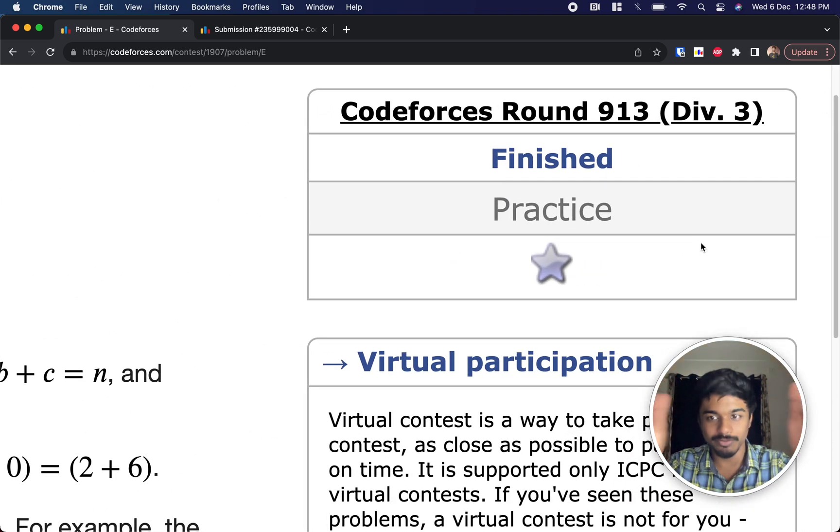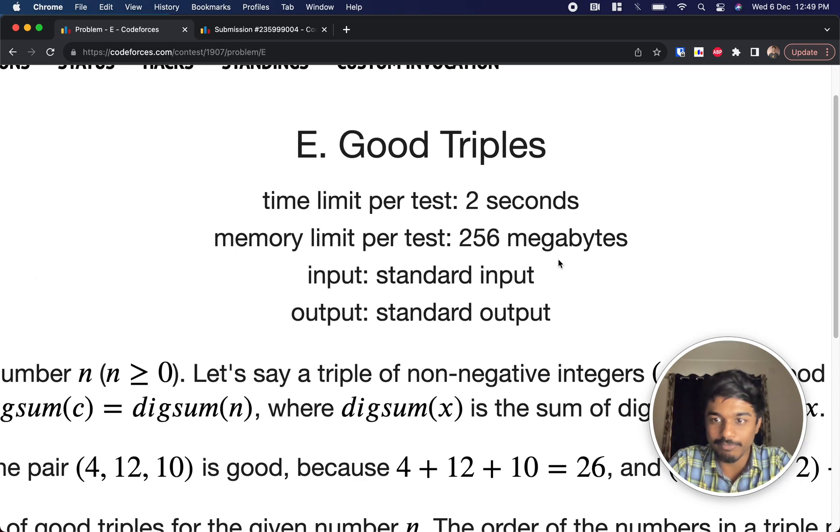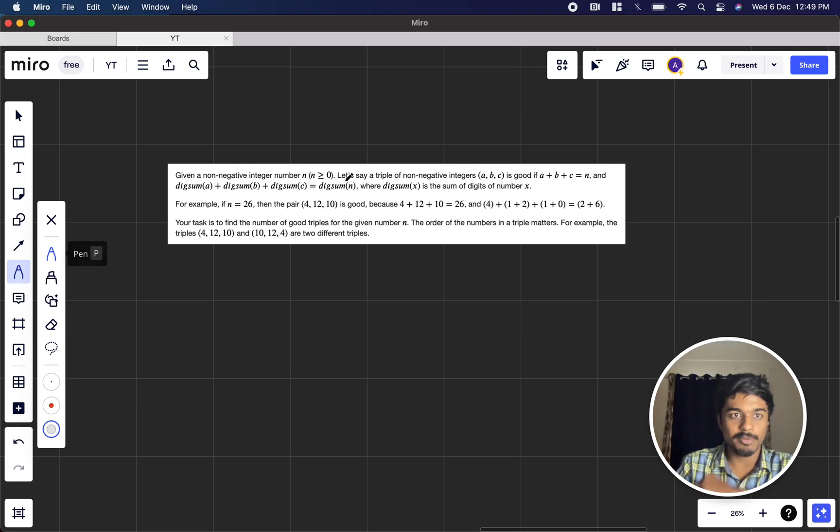Welcome back to another video. This is CodeForces problem 913, problem C. We're going to solve the fifth problem, that is Good Triples. Let's see what the problem states.